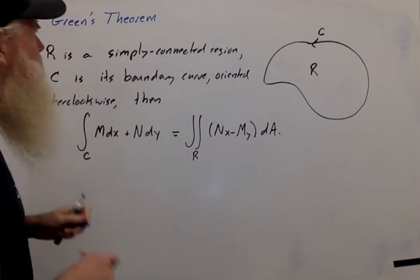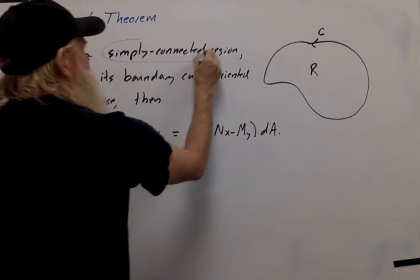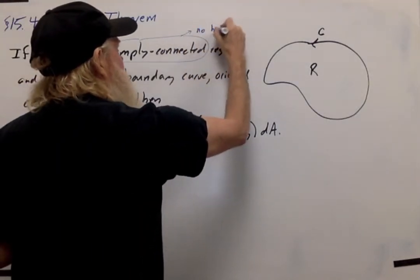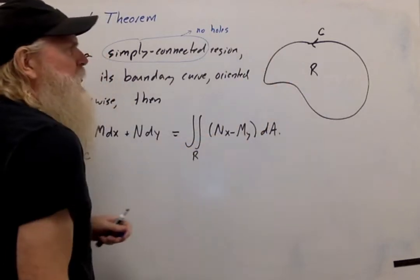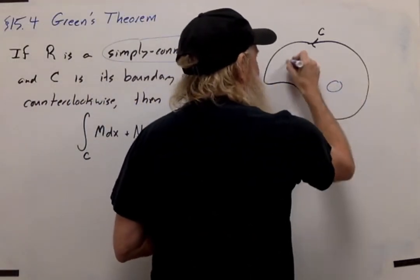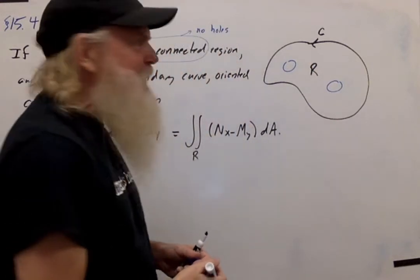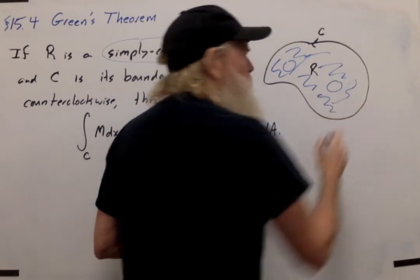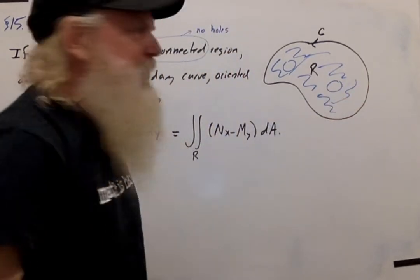So first of all, let me make sure that everyone understands what I mean by simply connected. What that means is that there are no holes in the region. So in this picture, this is a region with no holes in it. If I were to cut some holes in it like that so that R were the part in between, excluding those holes, that would not be considered simply connected.